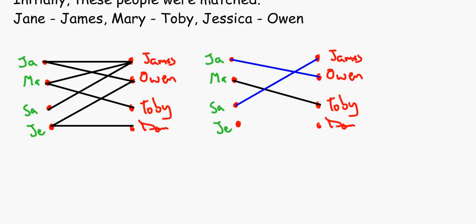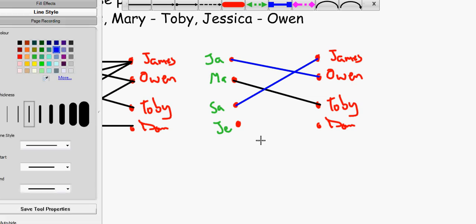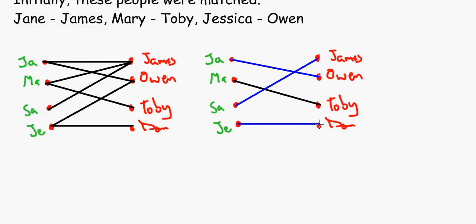And then Jessica can be matched up with Dom. So I have to keep on changing the colors. Jessica can be matched up with Dom. And there you have it, that's a complete matching because there's eight vertices and four edges. And also, there are no two edges coming from a vertex. So we have done it, we have created a maximal matching.